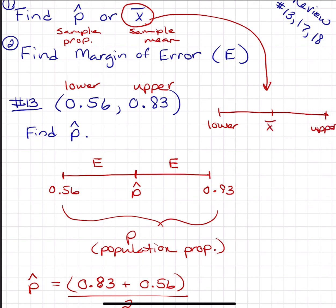Your sample mean is right there in the middle, and you're using that to estimate your population mean. So that's if you were doing it for a mean instead of a proportion, but you would find it the exact same way.